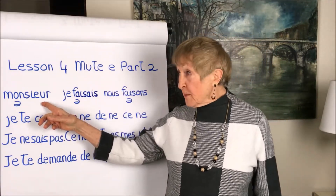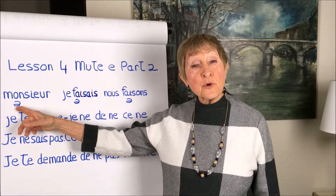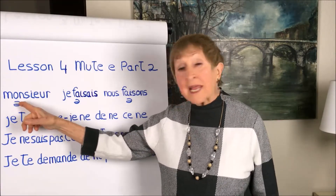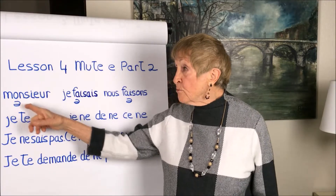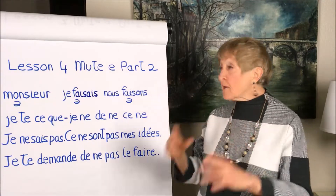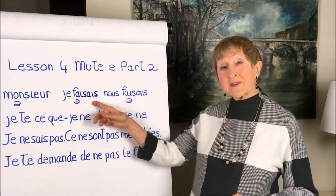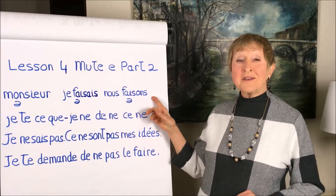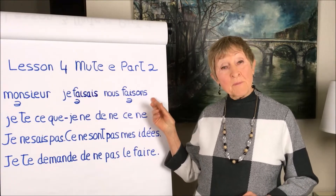In the word 'monsieur,' for example, that first 'eu' is a mute-e. I've put the International Phonetic Alphabet symbol there so that you can see it's 'monsieur.' And in the root of the verb 'faire' we actually have a mute-e — we have 'je faisais' and 'nous faisons.' You'd never know it from the spelling, but those are actually mute-e's.